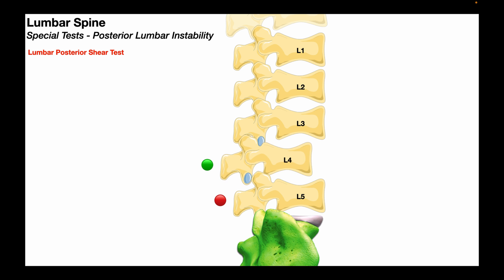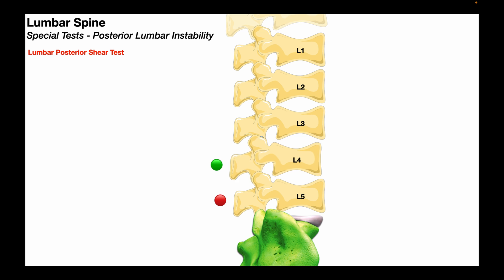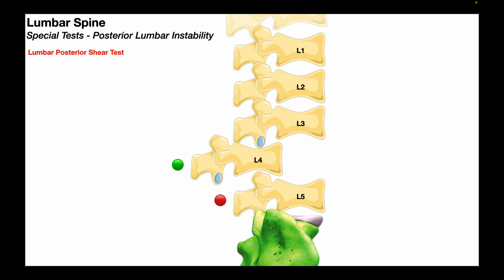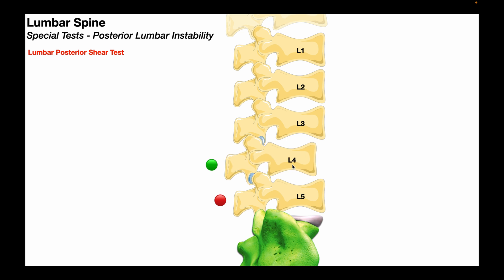This is an exaggerated view of what you should feel in the event of a positive posterior shear test. L5 is being stabilized firmly and L4 is palpated loosely, and we're looking for excessive posterior movement of L4 relative to L5. If we detect that excessive movement of L4 relative to L5, that would be a positive posterior shear test.